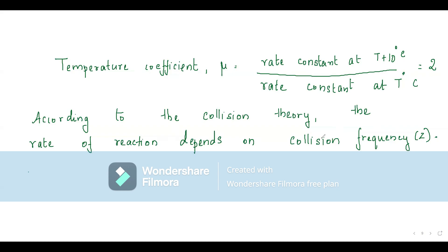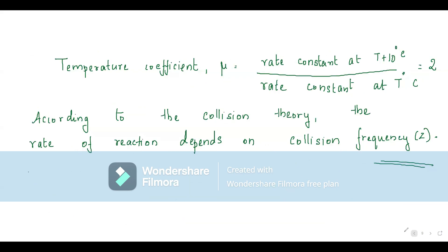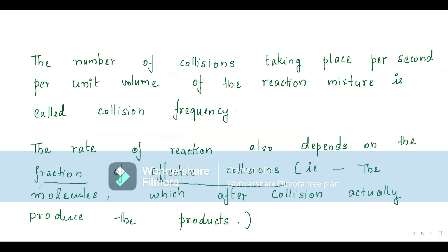According to collision theory, the rate of a reaction depends on collision frequency and on the fraction of effective collisions. There are two key terms we need to learn: collision frequency and fraction of effective collision.